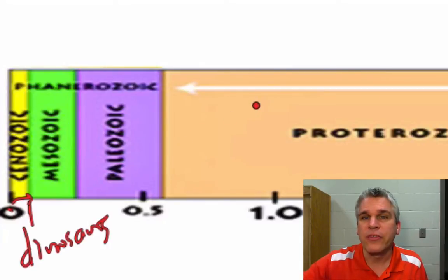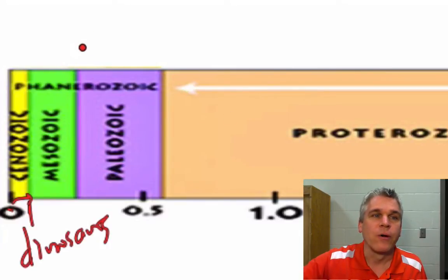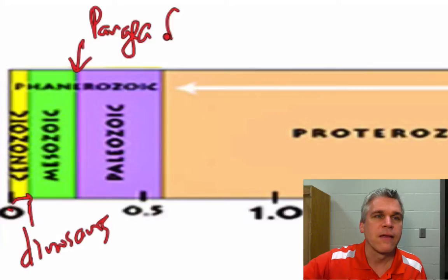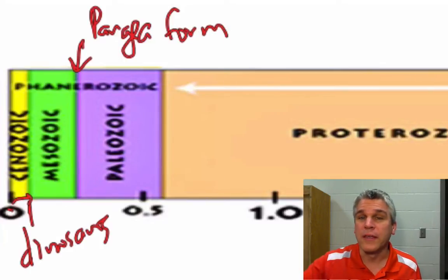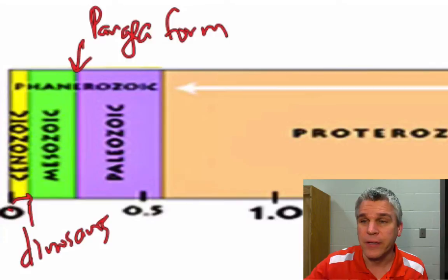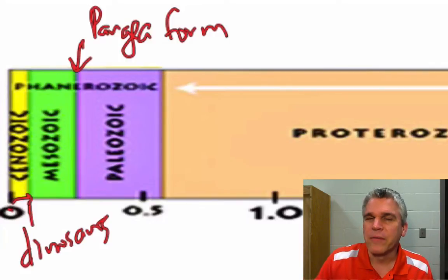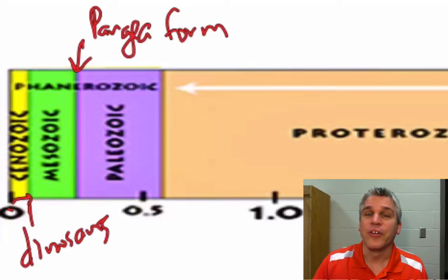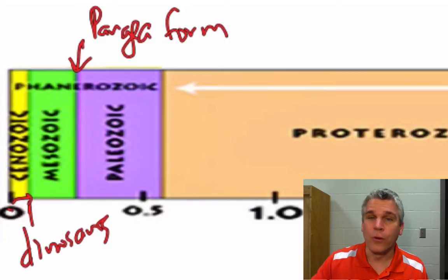When we talk about things like Pangaea, Pangaea started forming at the beginning of the Mesozoic Era — not breaking apart, but forming somewhere in that time period. Think about that: a million years is a long time. Imagine 4,600 million-year cycles. The Earth is very, very old.